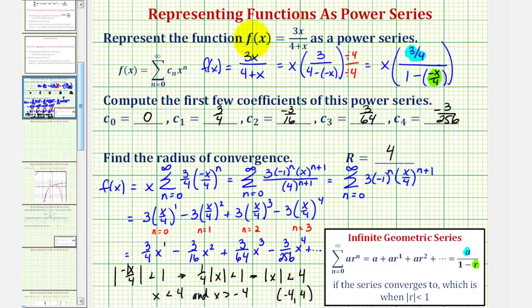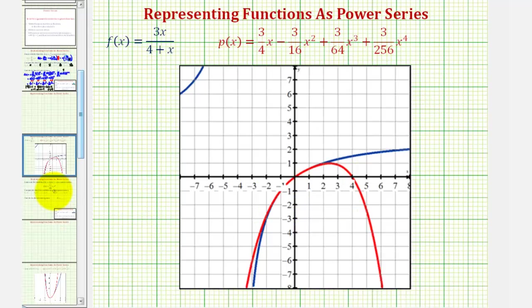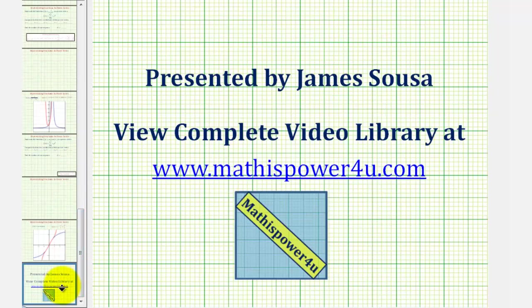Let's look at the graph of f(x) alongside the polynomial given by the first four terms of the power series. The original function is in blue, and the first four terms form a Maclaurin power series centered at 0. It's a nice approximation of the function near x equals 0 — including more terms would improve the approximation. The power series converges on the open interval from negative 4 to positive 4. I hope you found this helpful.